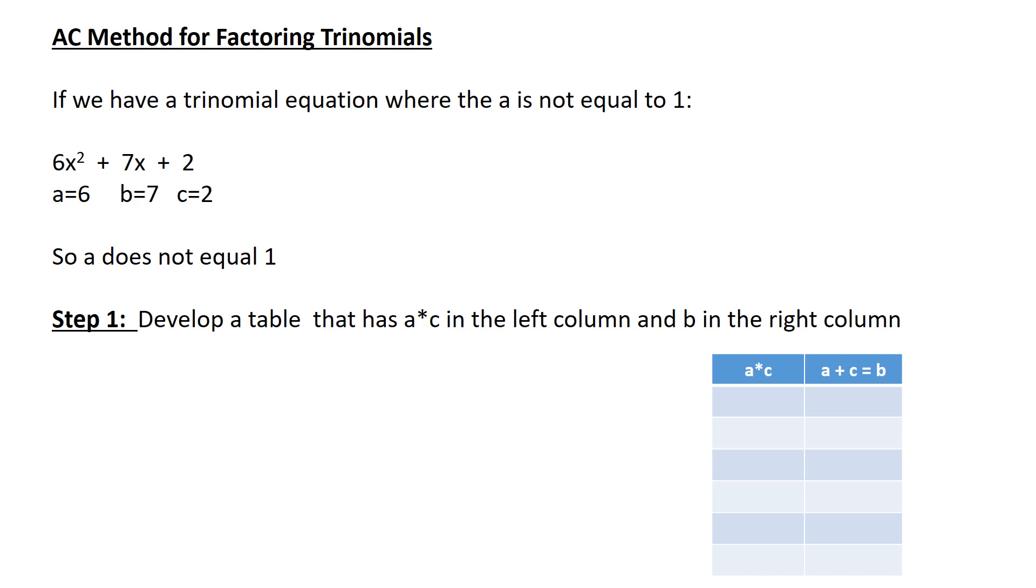For example, 6x² + 7x + 2. My A is 6 next to the x². My b is 7 and my c is 2. 7 for the 7x and the constant is c, 2. And as you can see in front of the x², it's not 1x² or commonly known as x², it's 6x². So this is where we use the AC method for factoring into two binomials.